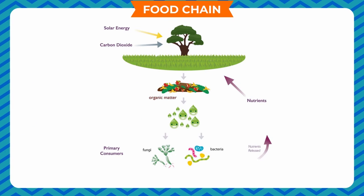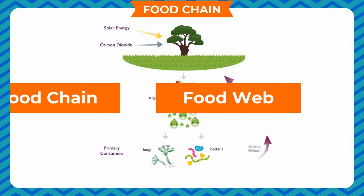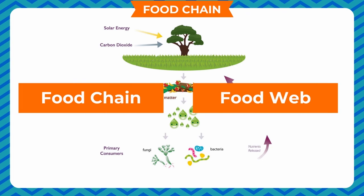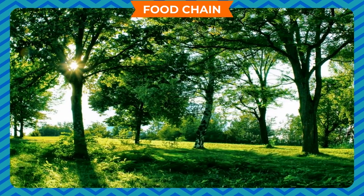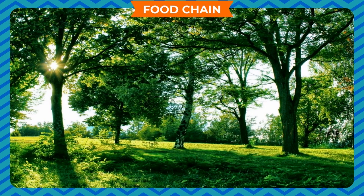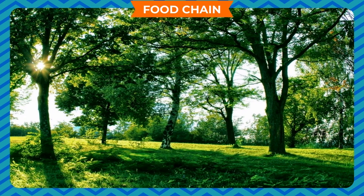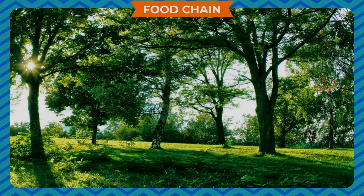If you show all the possibilities of energy transfer among a selected group of species, it is known as a food web. Food chains and food webs for different habitats are different, but all types of food chains begin from green plants. This means that all animals are indirectly dependent on green plants for food.